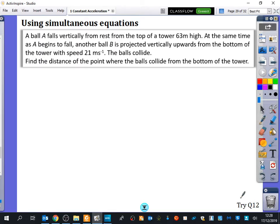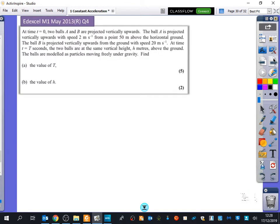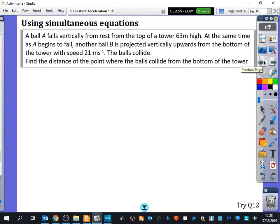So this is similar to question 12. It's also going to be similar to this exam question that I'm going to ask you to have a look at as well at some point. So it says here, ball A falls vertically from rest from the top of a tower 63 metres high. At the same time as A begins to fall, another ball B is projected vertically upwards from the bottom of the tower with speed 21 metres per second. The balls collide. Find the distance of the point where the balls collide from the bottom of the tower.